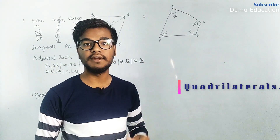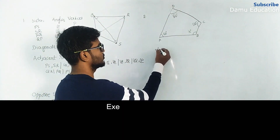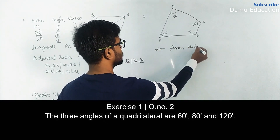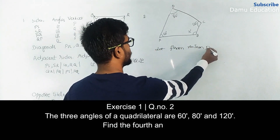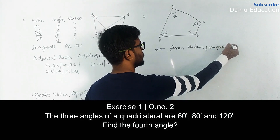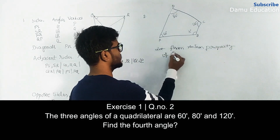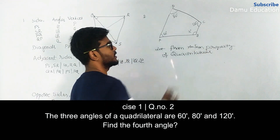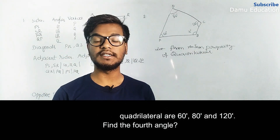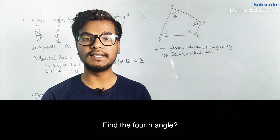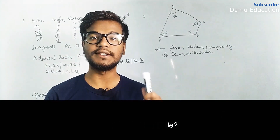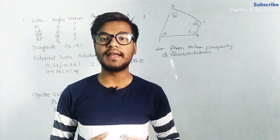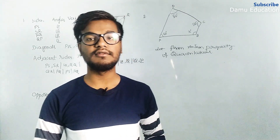The next question asks us to find angle B, given the remaining angles. We use the angle sum property of a quadrilateral: the sum of all four interior angles is equal to 360 degrees. Three angles are already given, and we have to find the unknown angle, which we call x degrees.